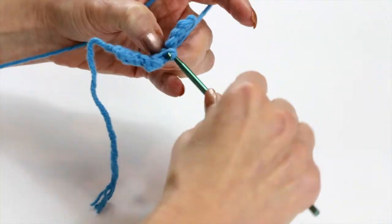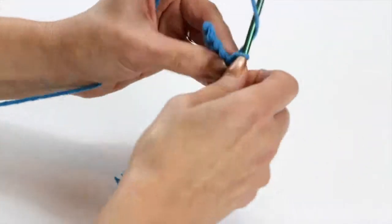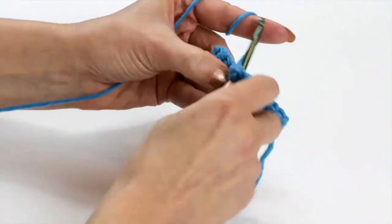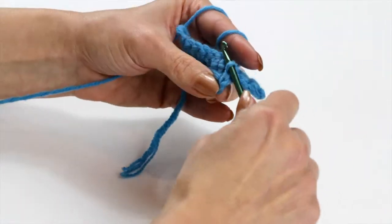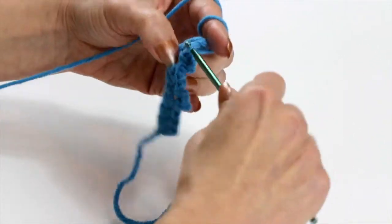I'm going to slip stitch three stitches, and then I'm going to chain three and insert back into the same stitch and slip stitch. I'm going to slip stitch until I get to the end of the row.